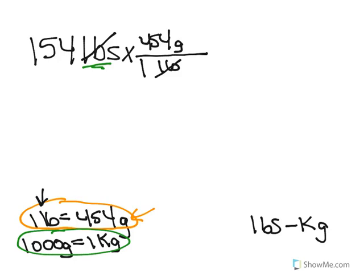But we don't want an answer in grams, we want an answer in kilograms. So let's look at our second piece of information. 1000 grams equals 1 kilogram. What do we want to get rid of? We want to get rid of the grams. So we're going to put grams on the bottom.